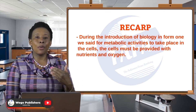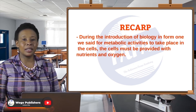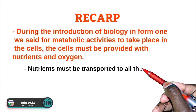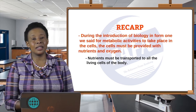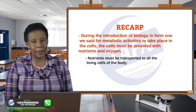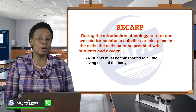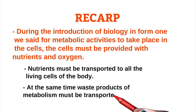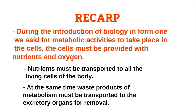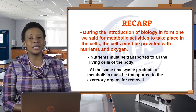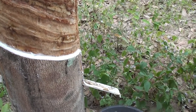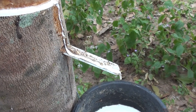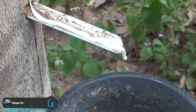Once nutrients are provided to the cells, they must be transported to all parts — throughout the whole plant system if in plants, or throughout the whole animal system if in animals. At the same time, when these nutrients and oxygen facilitate metabolic activities in those cells, the waste products of metabolism must be removed from those cells or transported to the excretory organs.